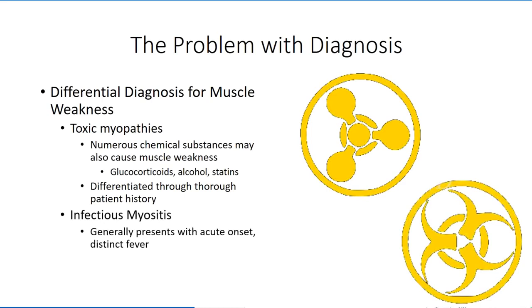Another distinct class are the infective myositis myopathies, which result from an identifiable infectious agent. This class of diseases has many pathological similarities to the inflammatory myopathies, but typically presents with an acute onset accompanied by systemic symptoms such as fever. We will briefly review these diseases in a later session.